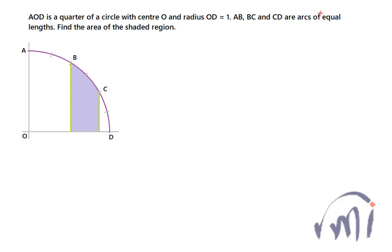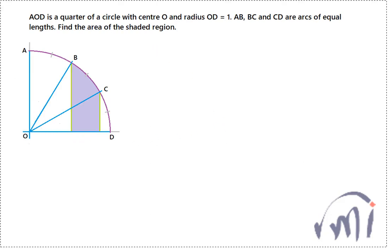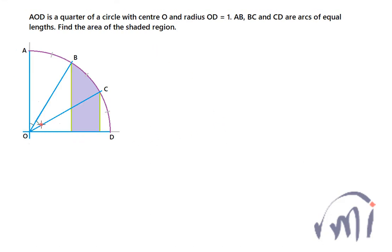Since AB, BC, and CD are arcs of equal length, they subtend equal angles at the center. So all three angles are equal. If each angle is theta, together they make 90 degrees, meaning 3 theta equals 90 degrees, so theta equals 30 degrees. Each of these angles is 30 degrees.